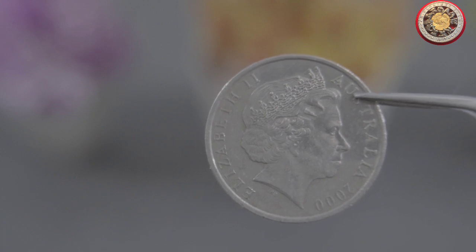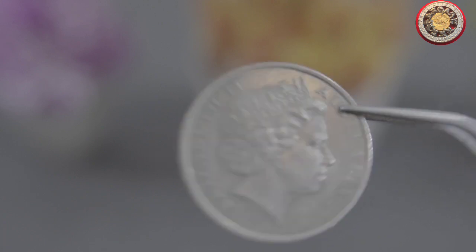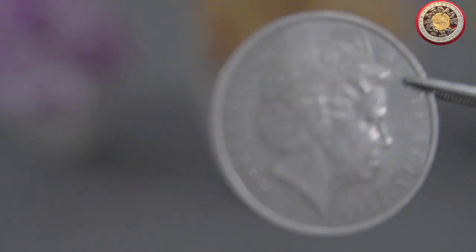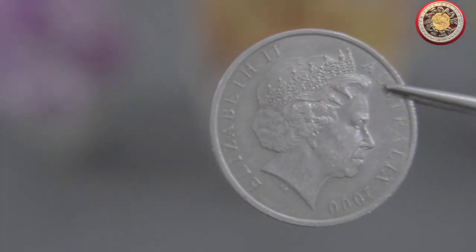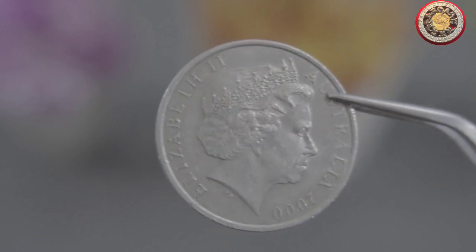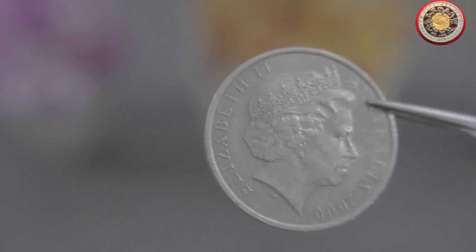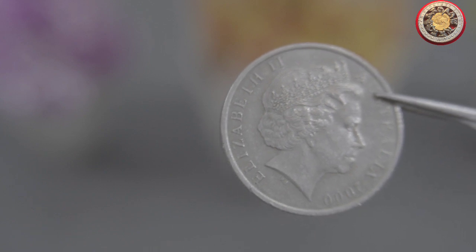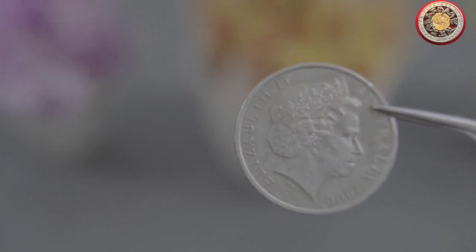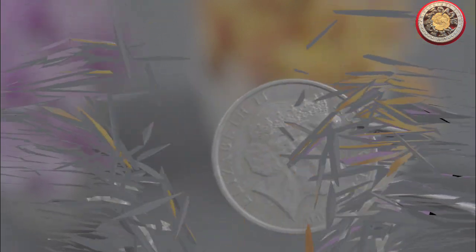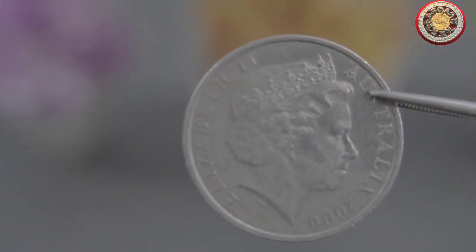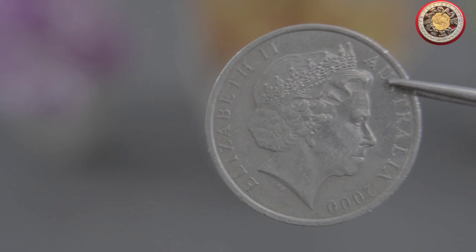Before we get started, it's important to note that clipping coins is not recommended for novice collectors. Clipping can significantly devalue a coin, and it should only be done by experienced professionals. To properly clip a coin, you'll need a pair of clippers and a ruler. Measure the diameter of the coin and mark a line at the halfway point. Using the clippers, carefully clip a small piece of the edge of the coin along the marked line. Be sure to only clip a very small piece, as clipping too much can significantly devalue the coin.